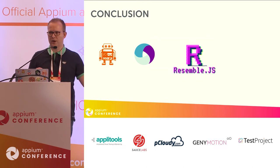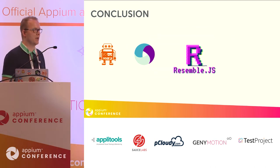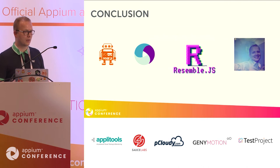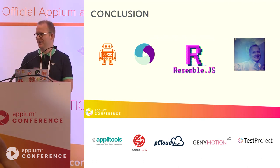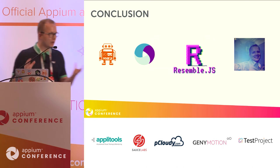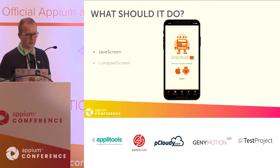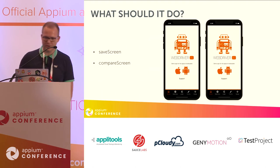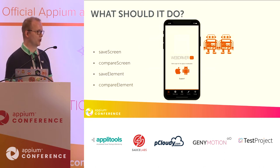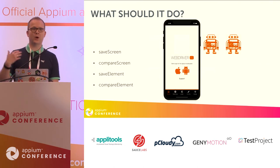We've got WebDriver.io, Appium, and ResembleJS. You might wonder why the images are not aligned — we're missing one important ingredient: some blue magic, because we need to stitch them all together. If you think about what the module should do: first, it should be able to create a screenshot; second, it should be able to compare those screenshots with each other; then we should be able to do a save element; and last but not least, a compare element. Let's dive into each method before we start coding.